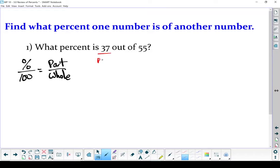this 37, that's our part. 55, that comes after the word 'of', so that's my whole. That's the part that goes on the bottom of the right-hand fraction. And the percent, well that's the part we're trying to figure out. Let's put those into our formula.